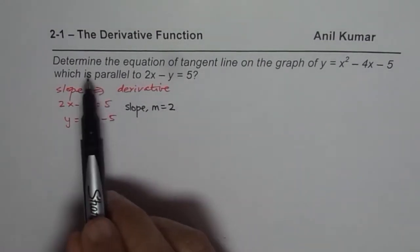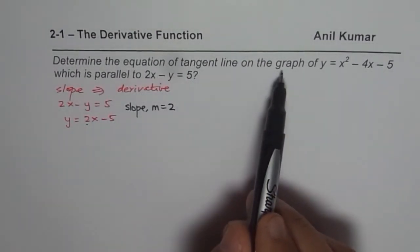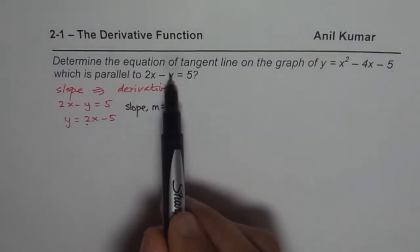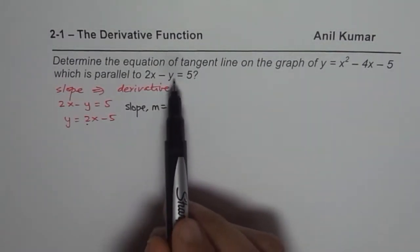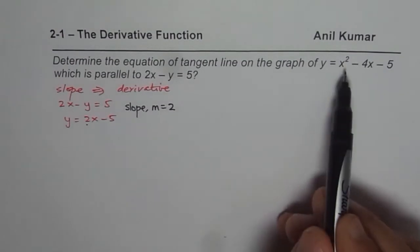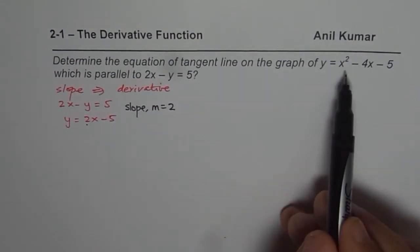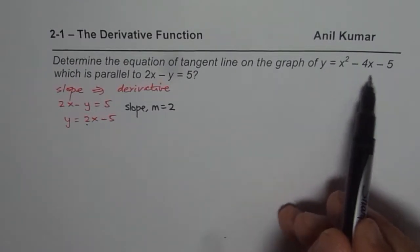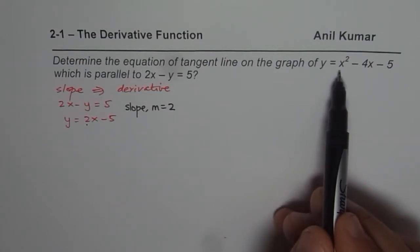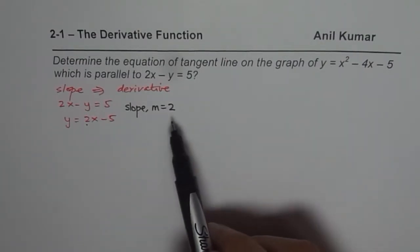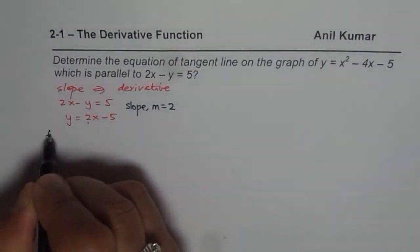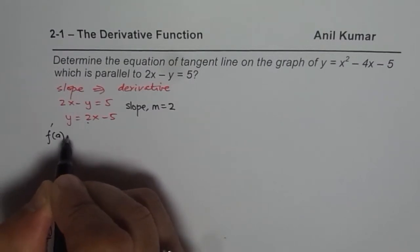Now let us read the question once again. Determine the equation of tangent line on the graph of y = x² - 4x - 5, which is parallel to the given line. We know the slope, but we do not know at which point this tangent will be on the graph of the given function. The point is unknown. Therefore, we will find derivative of this function at an arbitrary point a, and then equate that derivative, which is the slope, to 2. That is the strategy for us.